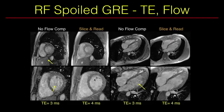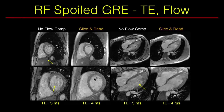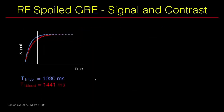Images acquired without flow compensation show blood inhomogeneities, while images with flow compensation in both short axis and long axis views show clearly improved uniformity in both slice and read directions. Note this is only a problem when acquiring images at long TE. Regarding contrast with RF spoiled GRE: the T1 of blood is longer than T1 of myocardium, so in a T1-weighted sequence, ideally blood will be dark compared to myocardium.